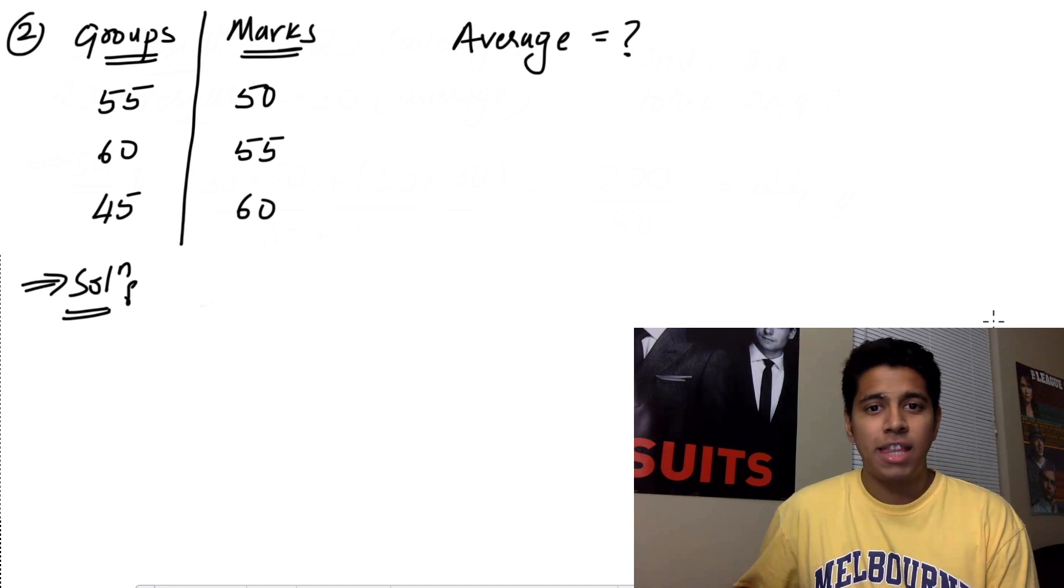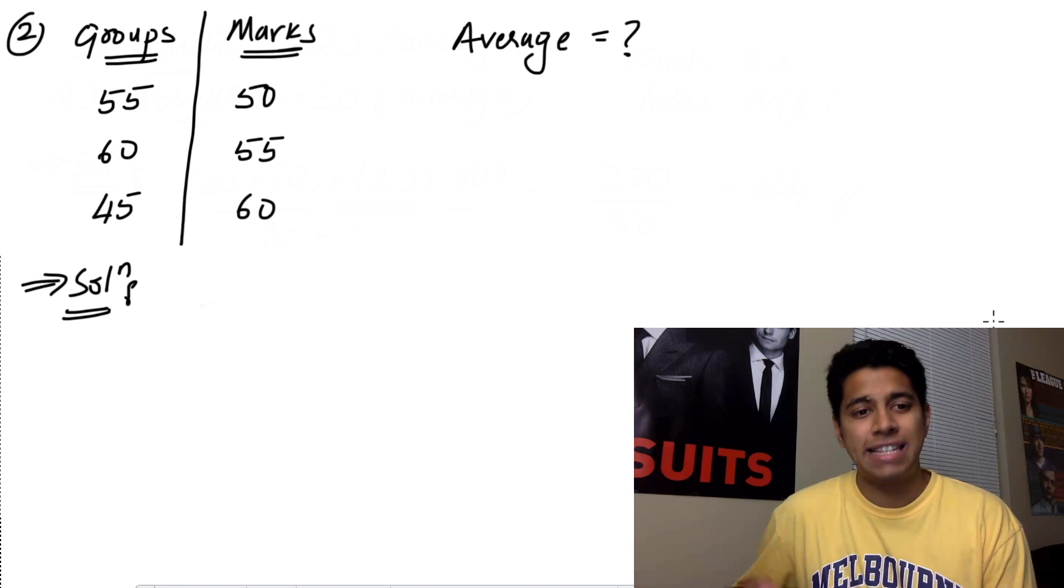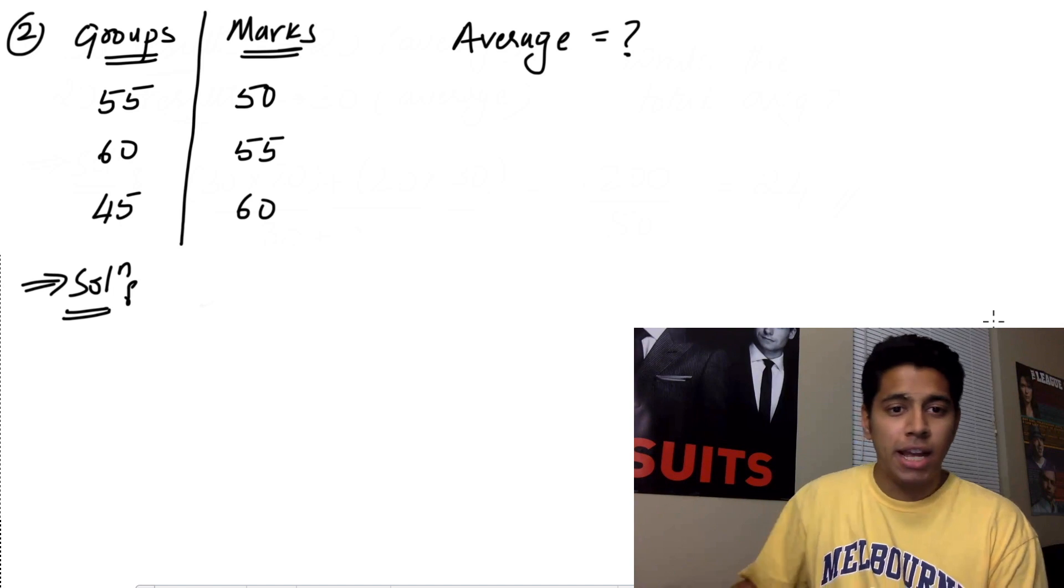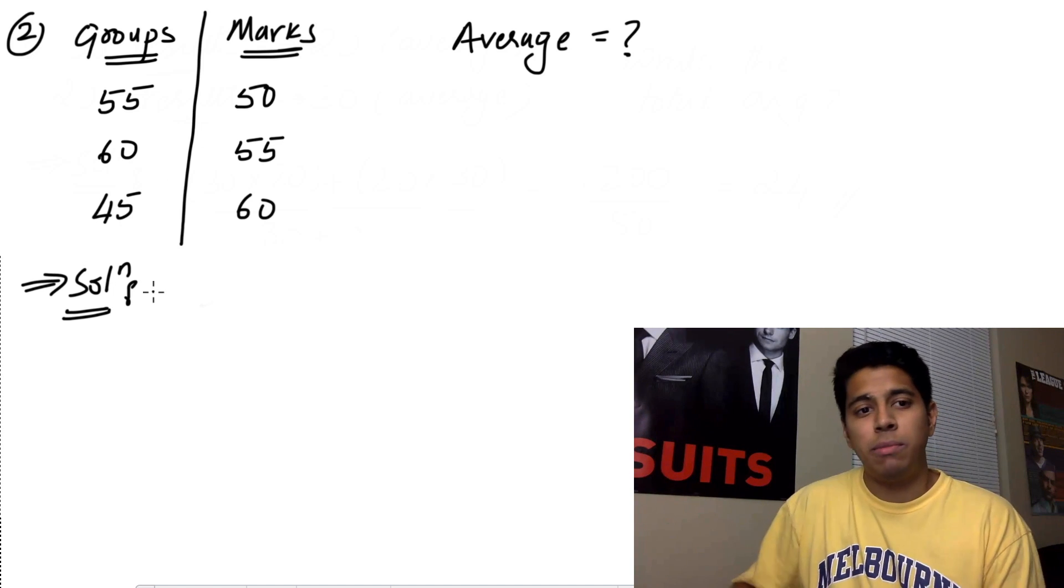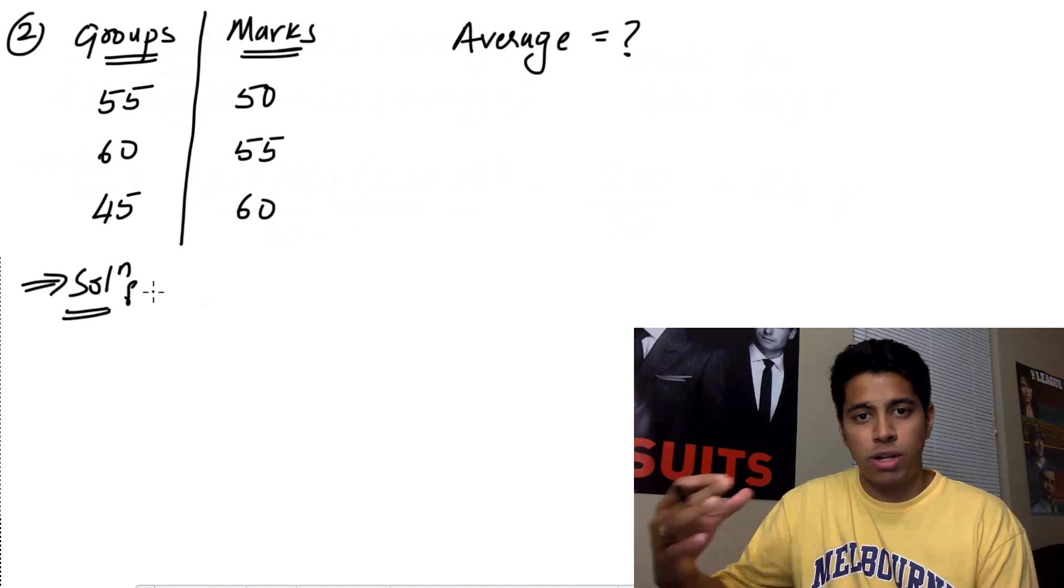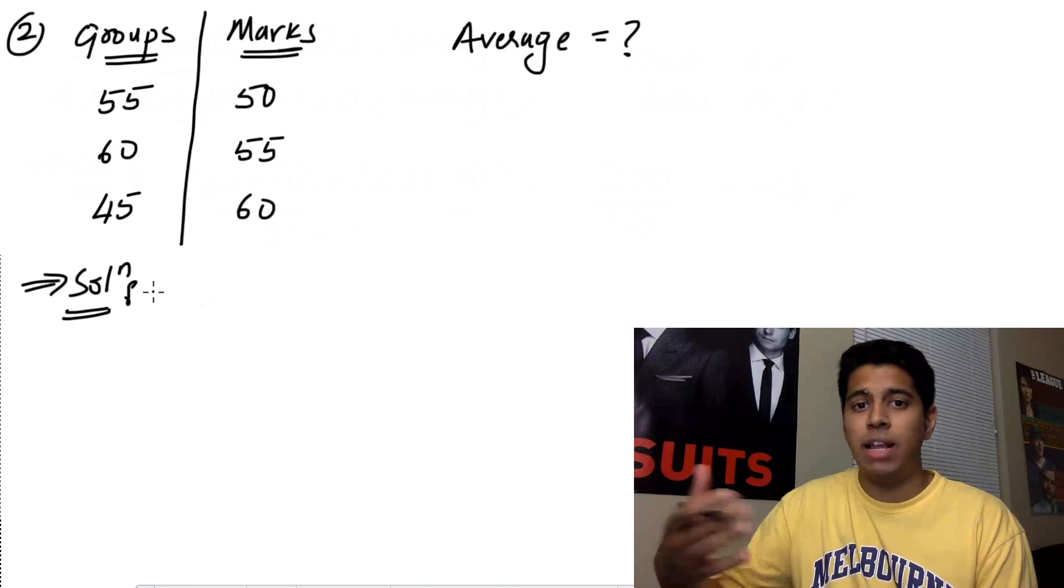Now for the second sum they've told you that groups of 55, 60 and 45 have averages of 50, 55 and 60. What is the total average of the group? So now similar to the first problem, you're just going to multiply it out, get the total sum divided by the total number of people and you're going to get your average.